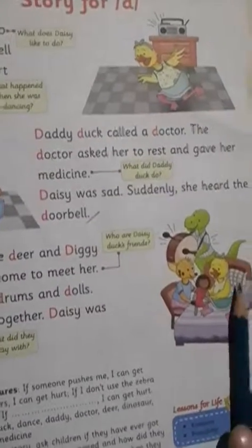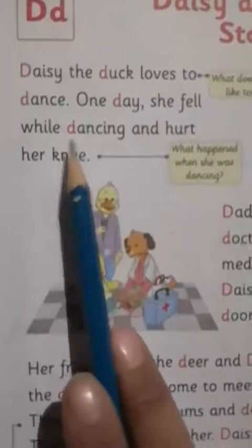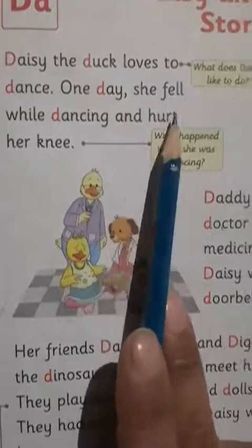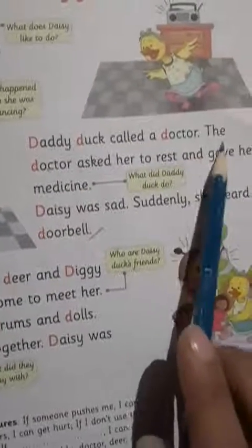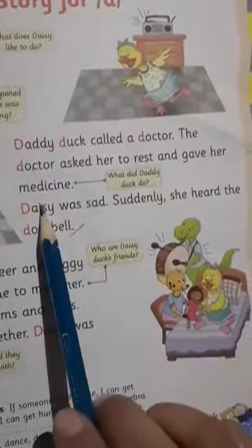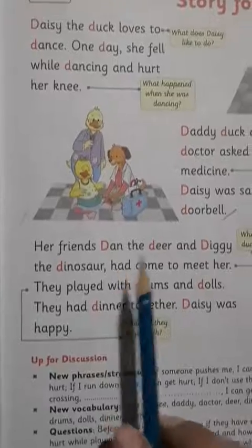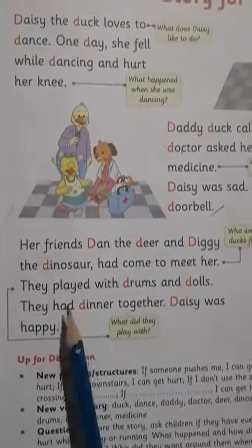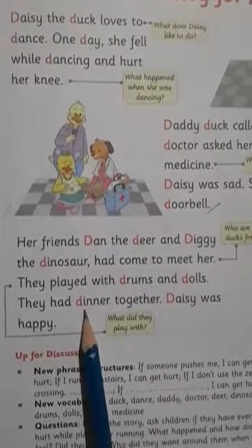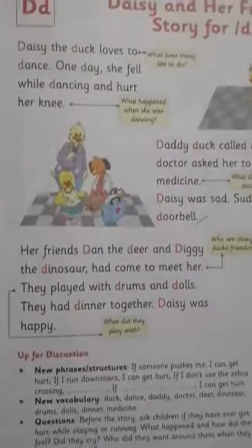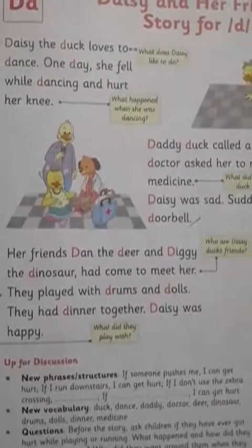Isse humein kya pata chalta hai — ki friends ke saath hum bahut khush hote hain. We are very happy when our friends are around. So I'll read the story again — listen carefully: Daisy the duck loves to dance. One day she fell while dancing and hurt her knee. Daddy duck called a doctor, the doctor asked her to rest and gave her medicine. Daisy was sad, suddenly she heard the doorbell. Her friends Dan the deer and Diggy the dinosaur had come to meet her. They played with drums and dolls, they had dinner together. Daisy was happy. I hope you understood. If there is any confusion, you can contact me directly. Take care, Allah Hafiz.